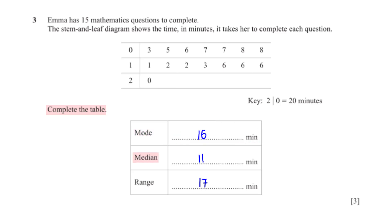The stem and leaf diagram has been arranged from the smallest number to the biggest number, so the median will be the number in the middle of this list, which is 11. The range is the difference between the biggest number, which is 20, and the smallest number, which is 3. 20 minus 3 gives us 17.